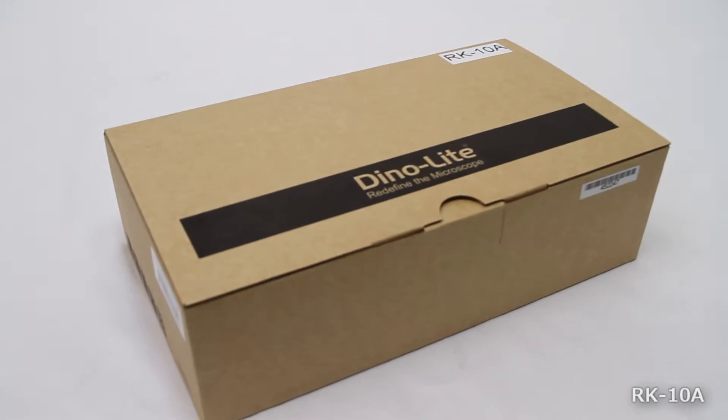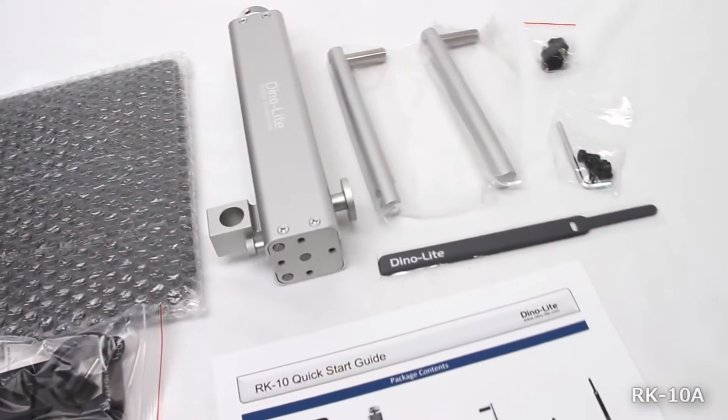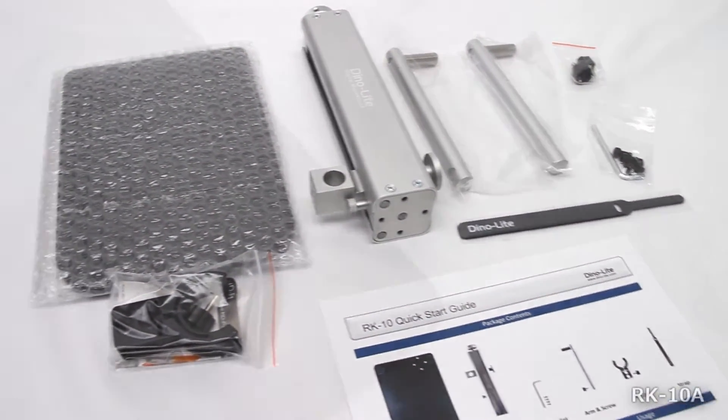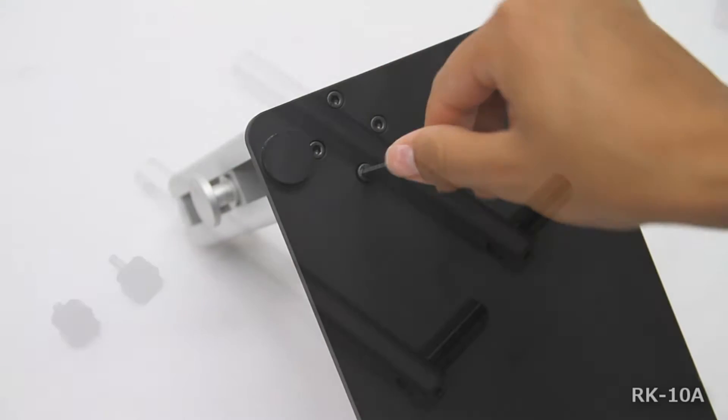The RK10A stand comes nicely packaged in this box and is very easy to assemble. Make sure the main assembly of the stand is facing forward on the base. Use the four allen screws and allen wrench to assemble the stand.